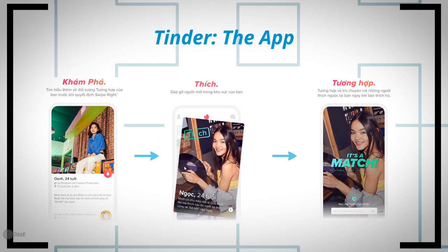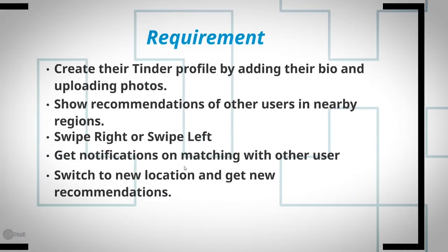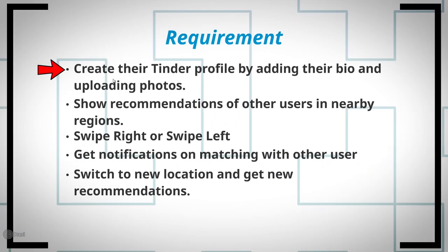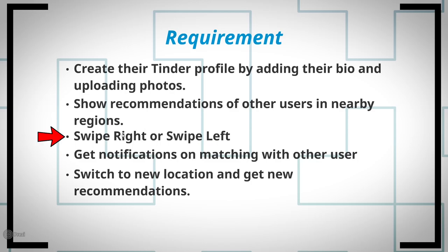Now let's break down the entire Tinder app flow into concrete requirements. First, a user should be able to create a Tinder profile by adding their bio and uploading photos. Second, a user should be able to see recommendations of other users in their near proximity based on geographic location. Third, users should be able to right swipe or left swipe based on their likes or dislikes. Fourth, users should get a notification whenever they match with another user. Fifth, users should be able to move to a new location and still get recommendations of nearby users there.